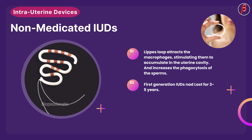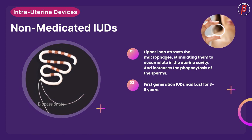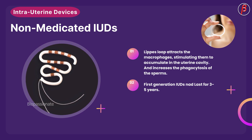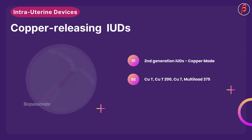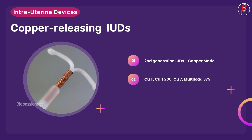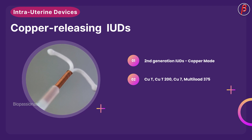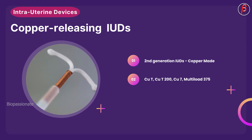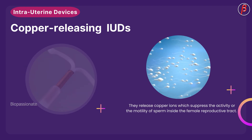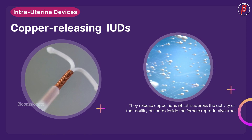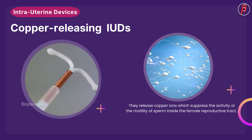The Lippes Loop is a non-medicated IUD that attracts macrophages, stimulating them to accumulate in the uterine cavity and increasing phagocytosis of sperms. These are first-generation IUDs and last for three to five years. Copper-releasing IUDs are second-generation IUDs; examples include CuT, CuT 200, Cu7, and Multiload 375. They release copper ions which suppress the motility of sperm inside the female reproductive tract.